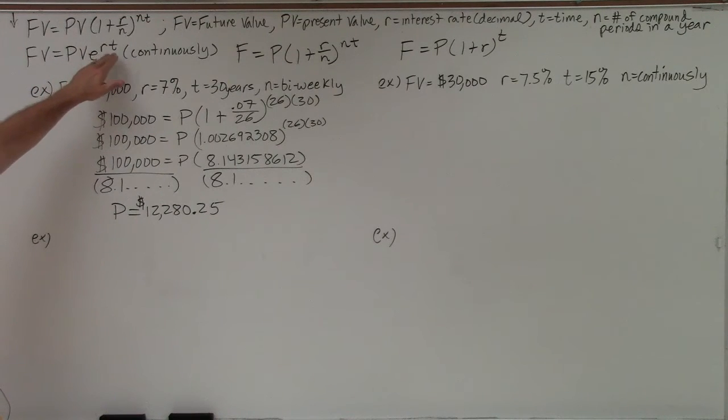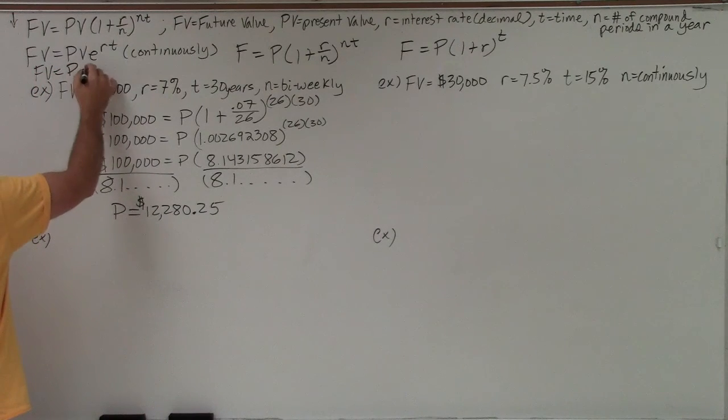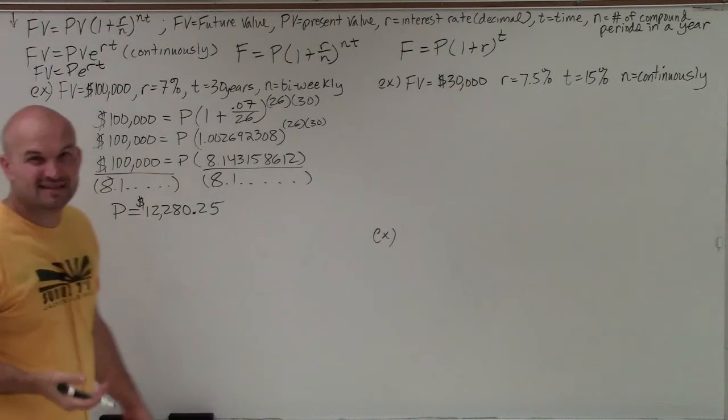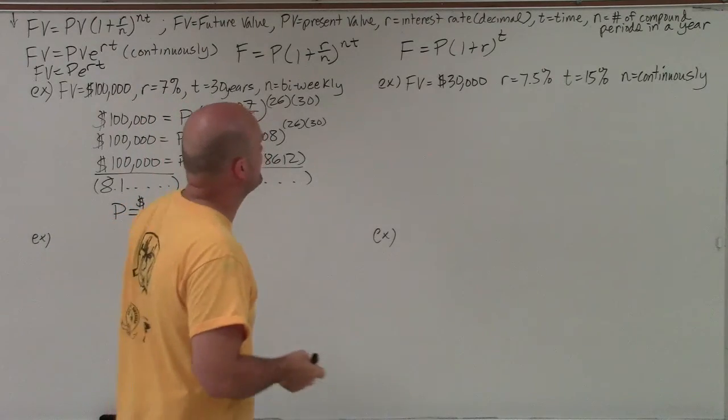It's PV times e to the r times t, or sometimes also just given as final value equals P times e to the rt. Same exact thing, just using P instead of PV.